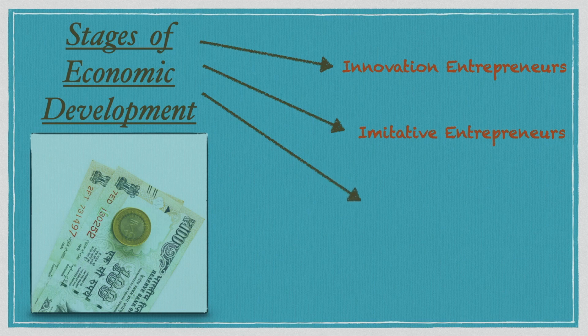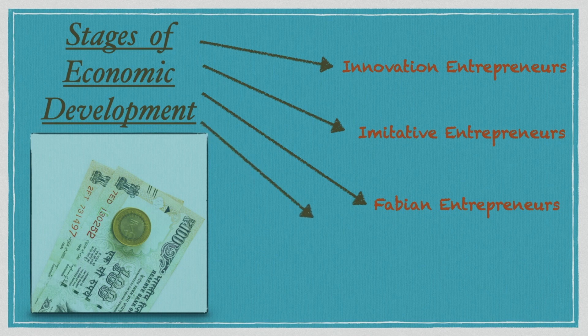Fabian entrepreneurs are very cautious people — skeptical about any change, and they only adopt changes under extreme conditions. Drone entrepreneurs follow traditional methods only, refusing to change anything. They accept losses in their business rather than make changes.